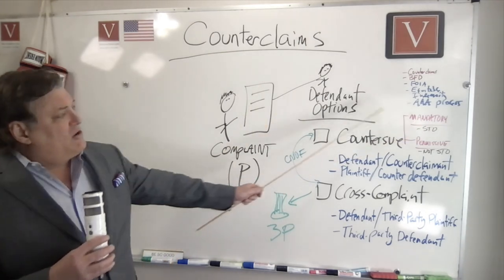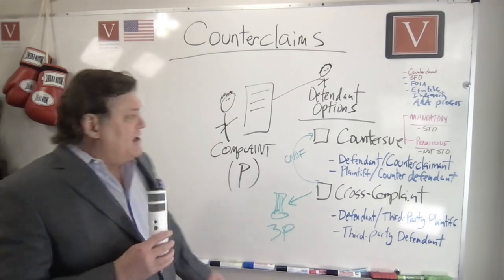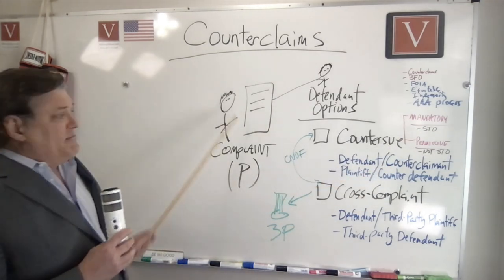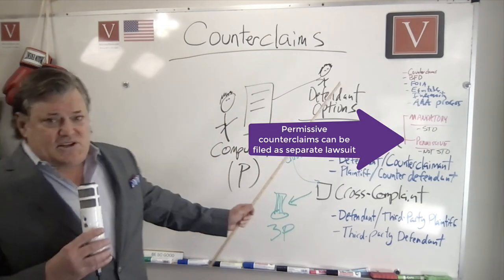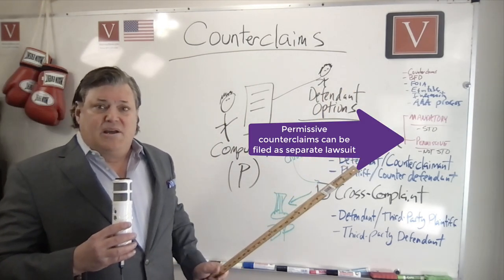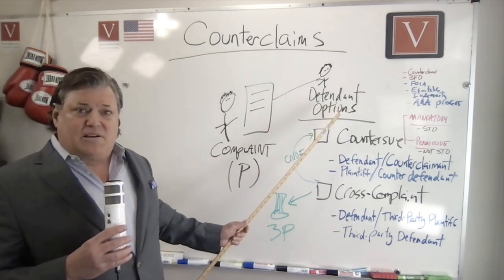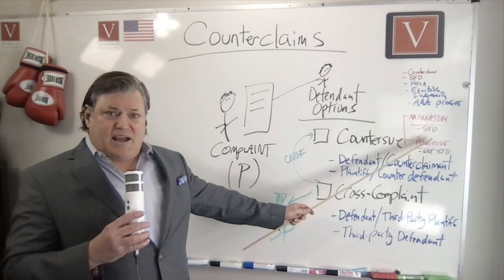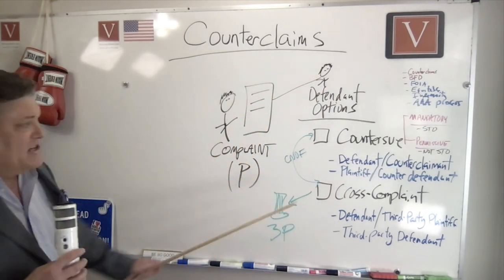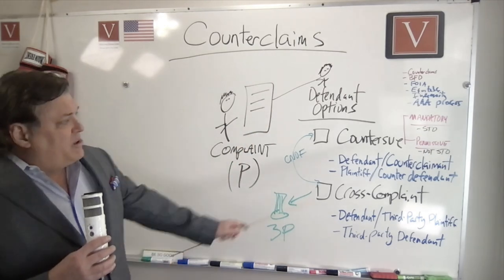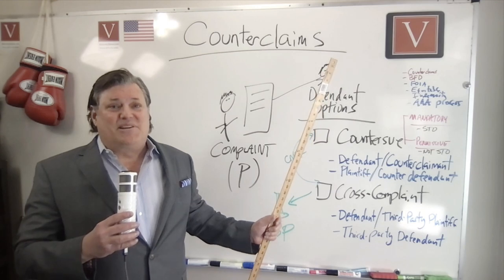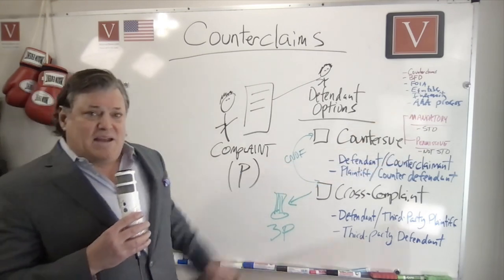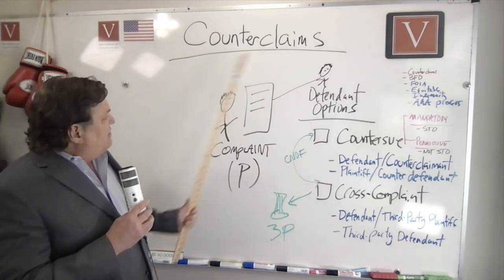Next, it could be a permissive counterclaim. This is something that may not necessarily be the same transaction and occurrence. For example, maybe between these two parties there was a copyright infringement dispute, and now you're thinking: you're suing me for this contract, but I had this claim I hadn't been planning on bringing just yet. Since we're all here anyway, for judicial economy and judicial efficiency, why don't we just have it all heard here?